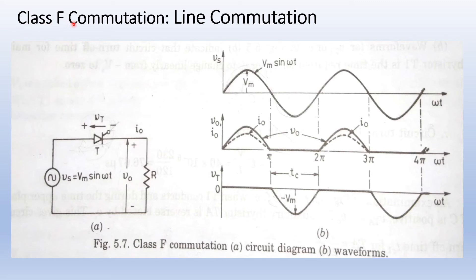Class F commutation or line commutation. This type of commutation is also known as natural commutation. This can occur only when the source is AC.